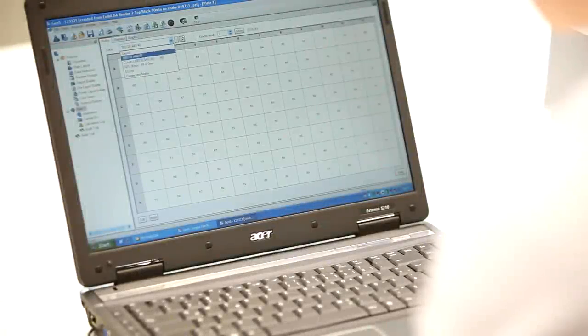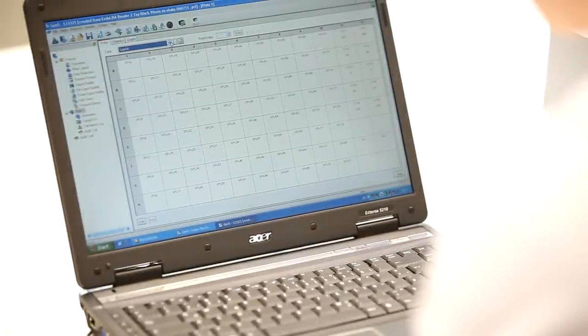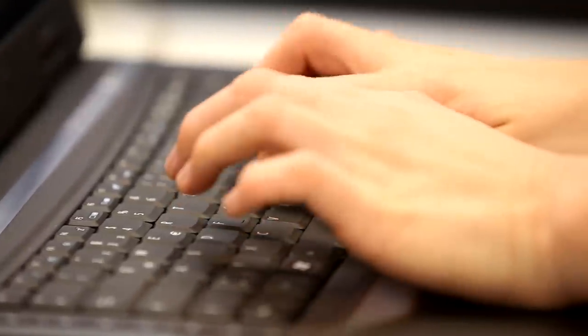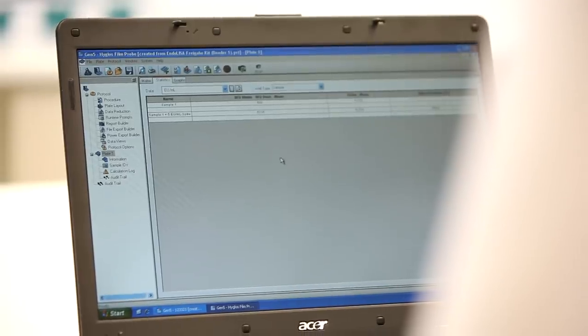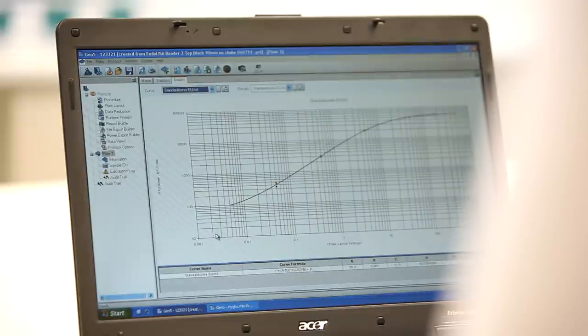Make the first fluorescent signal reading at time point zero and incubate the plate at 37 degrees for 90 minutes. Then make the second endpoint fluorescent signal reading. Subtract the time point zero values from the endpoint values.